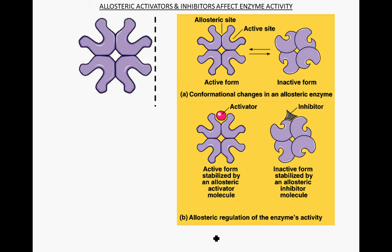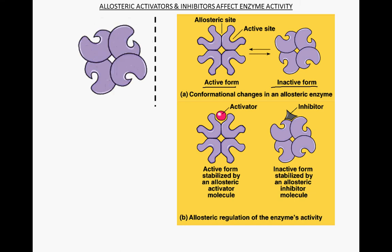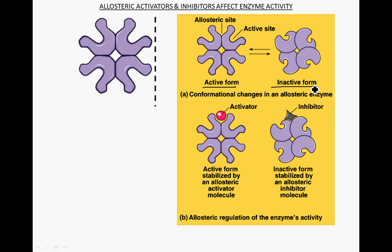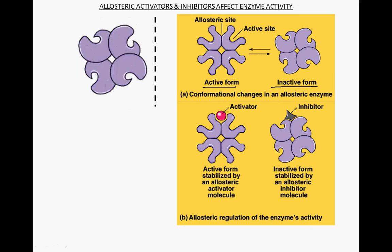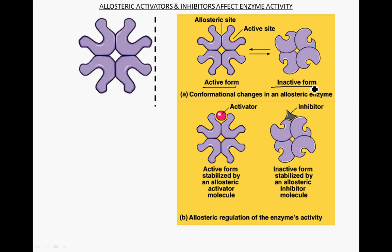Moving on to allosteric activators and inhibitors affecting enzyme activity. This gets a little more complicated: some enzymes have an active form and an inactive form, and the enzymes oscillate back and forth between these two conformations. As they're made, they're actually oscillating between active conformation and inactive conformation.